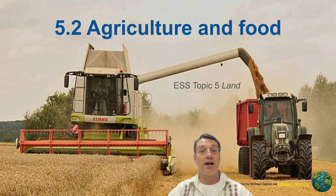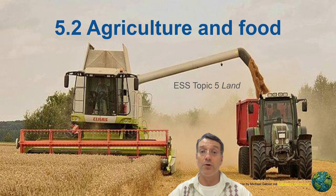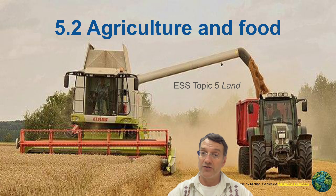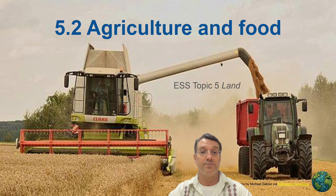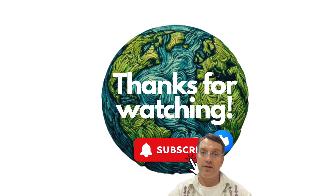That's it for our exploration of sustainable agriculture and food security in ESS Topic 5.2. Remember that feeding humanity sustainably requires balancing productivity with environmental protection, considering both equity and efficiency, and combining traditional knowledge with technological innovation. The challenges are complex, but understanding these systems gives us the foundation to work towards solutions that can nourish both people and the planet. Until next time, happy learning.